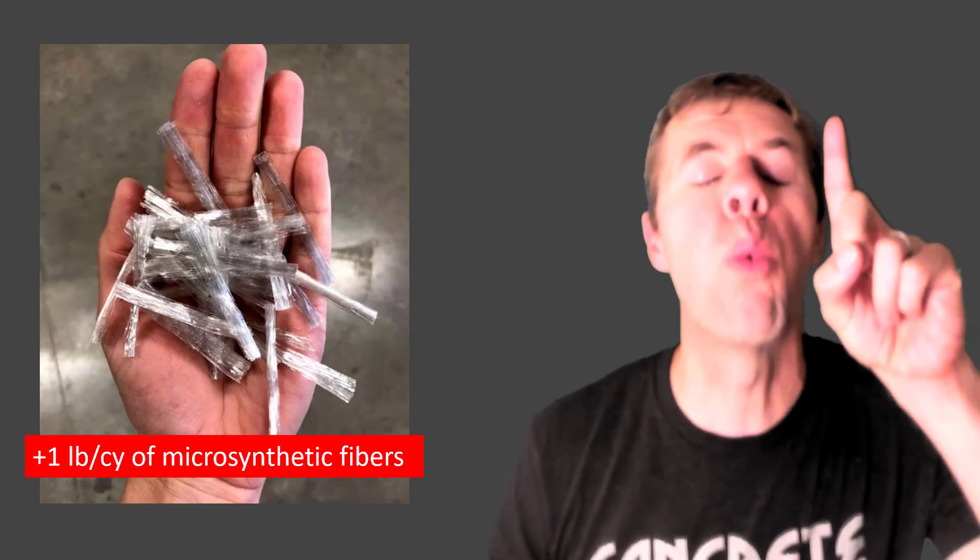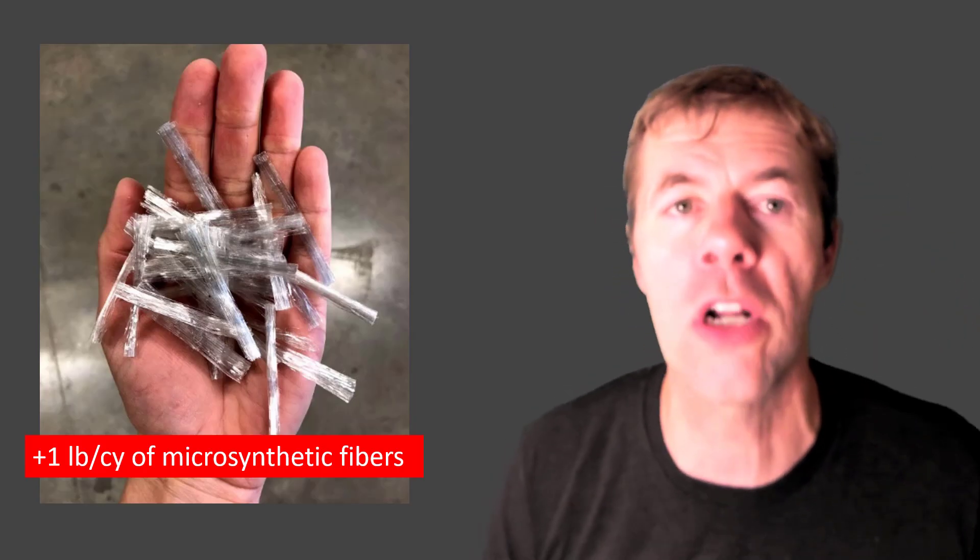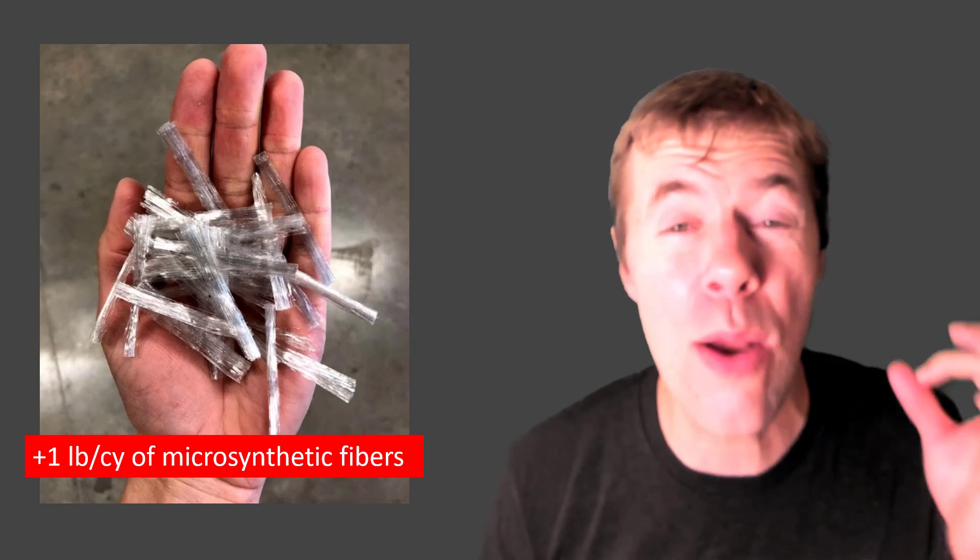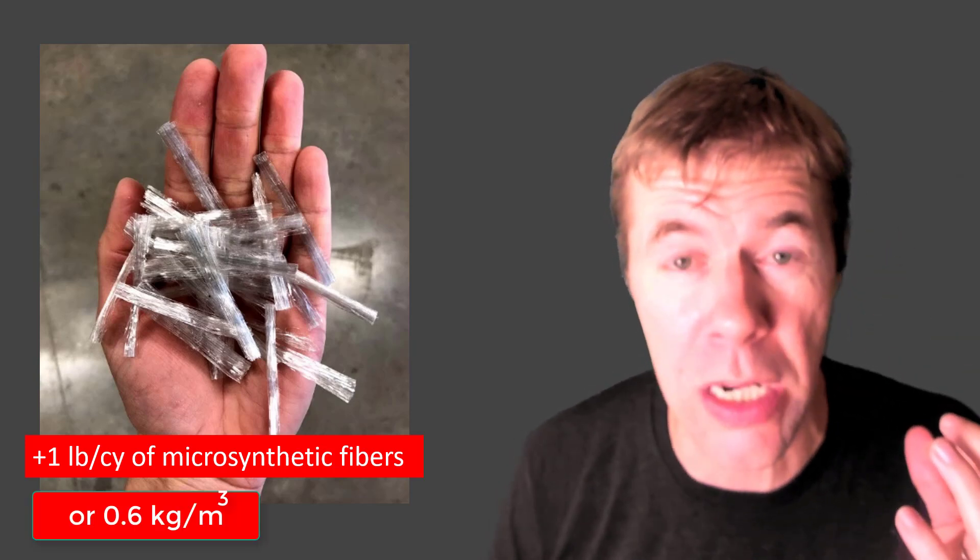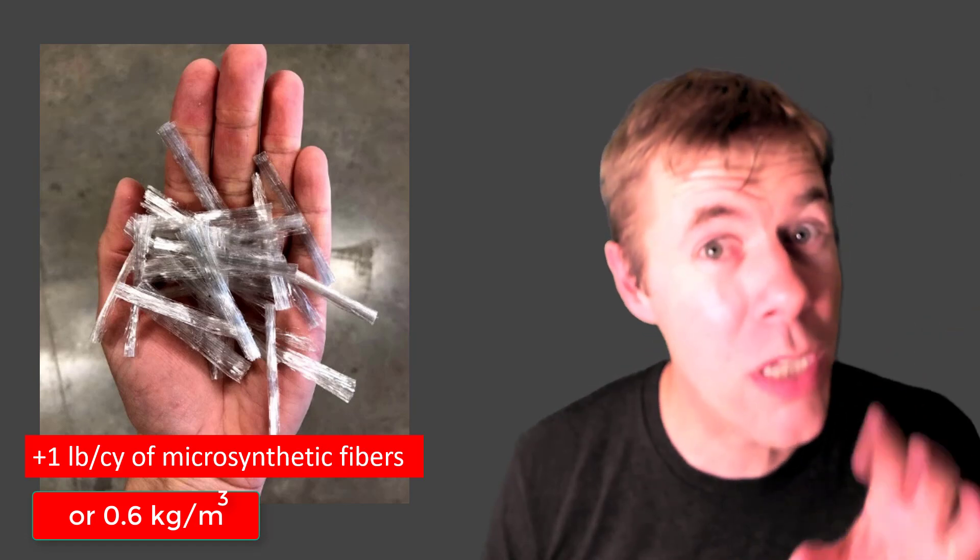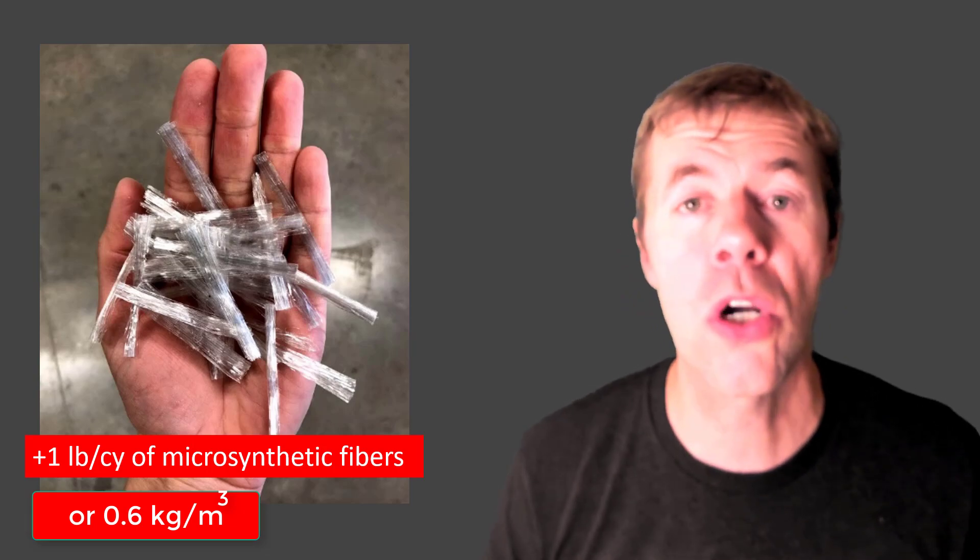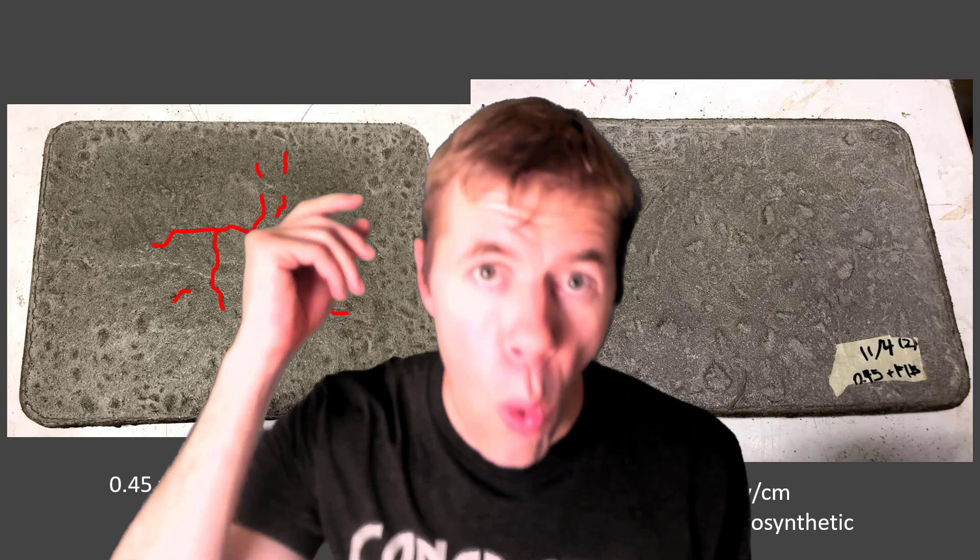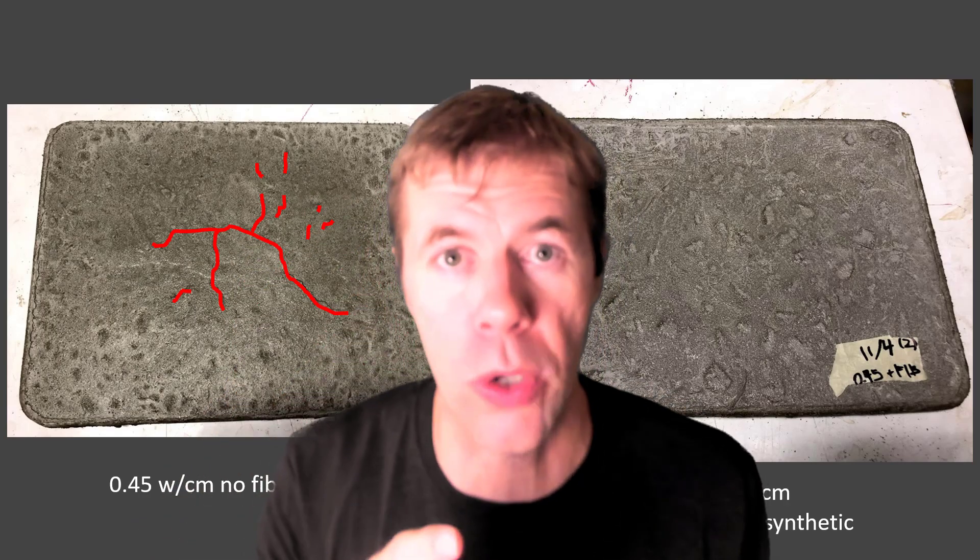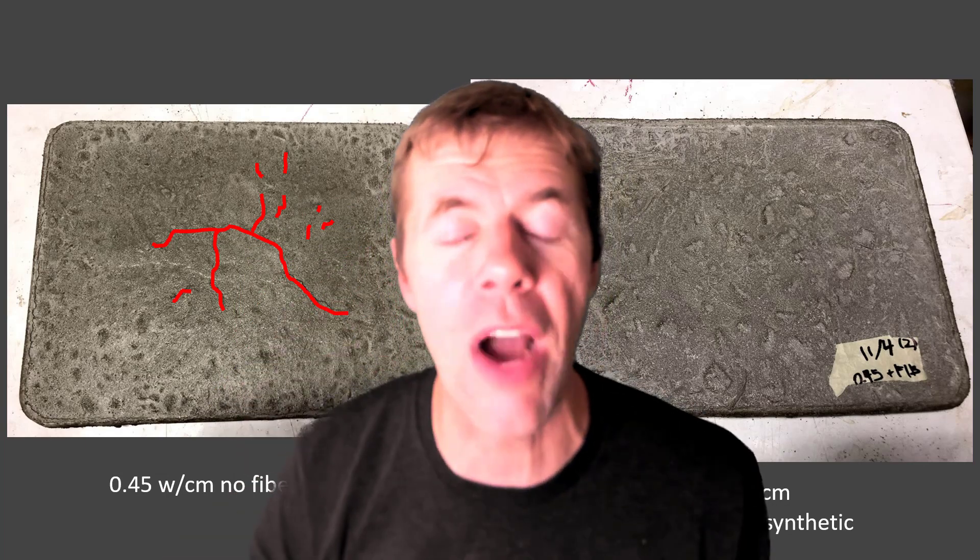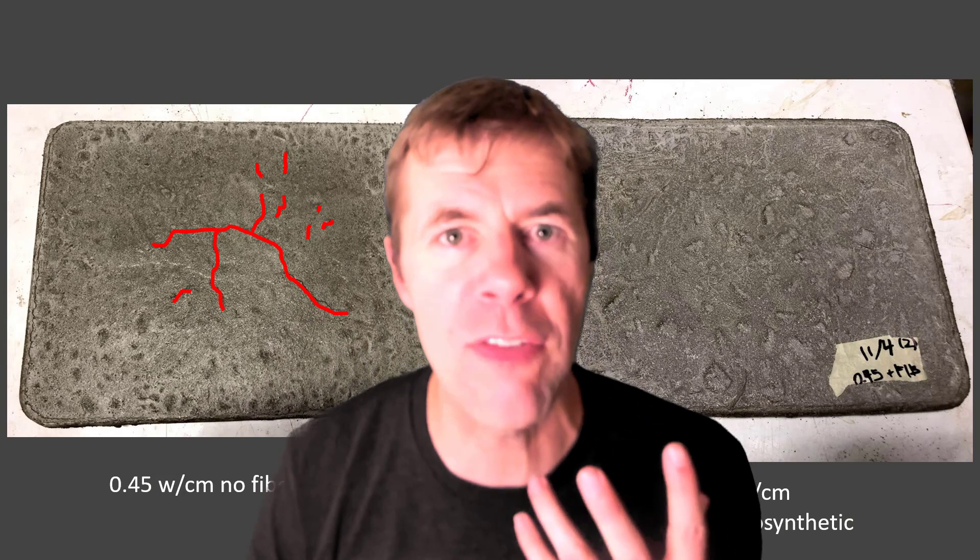But if we use one pound per cubic yard of these microsynthetic fibers, one pound per cubic yard, that's a rounding error, ladies and gentlemen, on a batch ticket. That is not much material. That should not be that expensive of an addition to your concrete mixture. Look what happens. We have the image on the left, no fiber. The image on the right, fiber. Why are we placing concrete in hot, dry environments without these fibers? These are unbelievable tools.